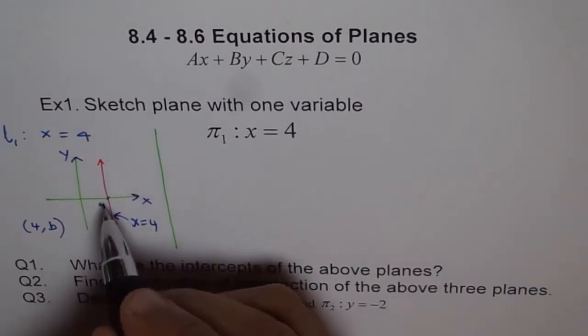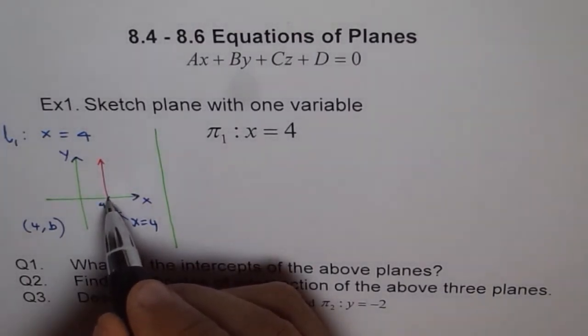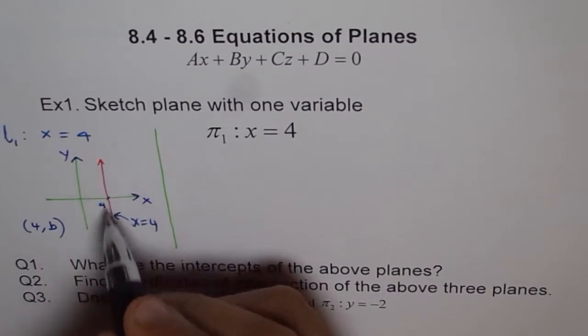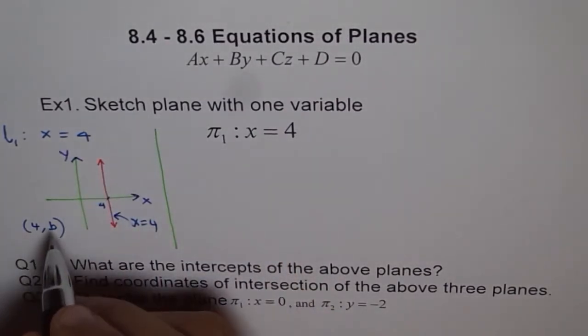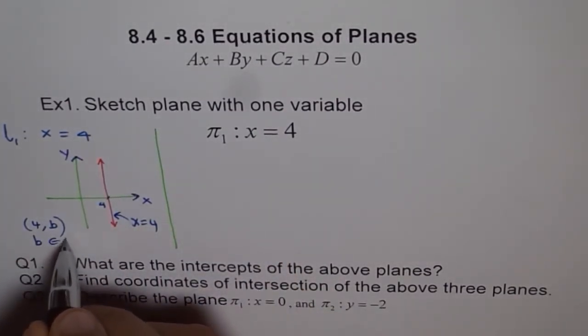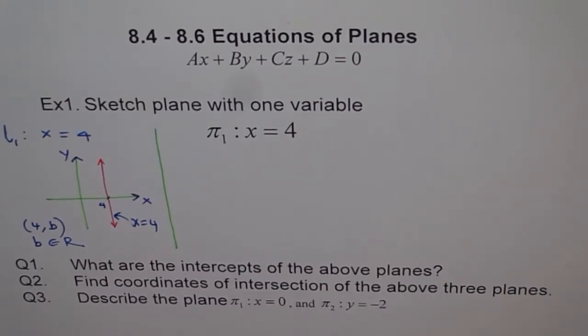And every point on this line could be anything like four comma any value. Let's write b where b is y value. Four comma y I could have written. Any point. Four comma zero, one, two. So the y values can have any number where b belongs to set of real numbers. So that makes a vertical line x equals four. So in two dimensions we give x equals four as a straight line where x is fixed, that is four, and y could have any value, any real number.